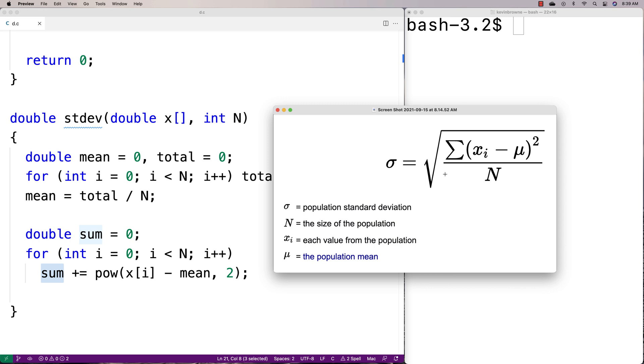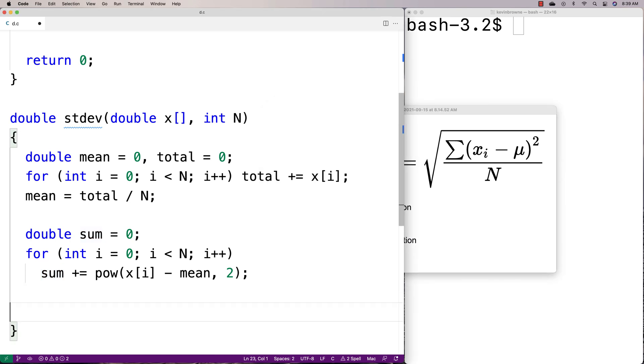Next, we need to divide the result by n and do a square root of that. We can do that all on one line as we return the value. We'll say return sqrt(sum divided by n).